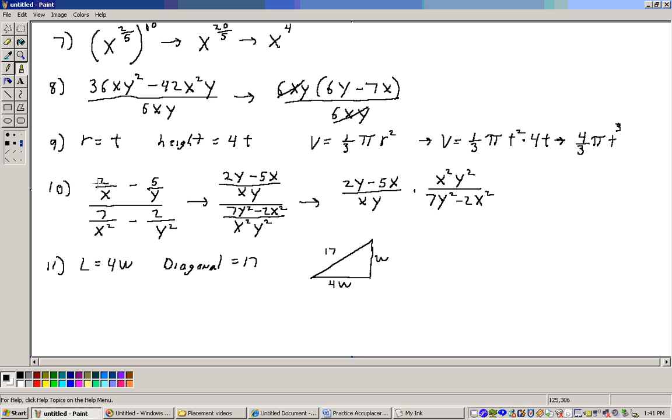Number 10 is a messy one too. We've got a complex fraction, 2 over x minus 5 over y, all that over 7 over x squared minus 2 over y squared. We've got to get a common denominator on the top fraction, which would be xy. What's extra here that's not in this denominator? A y, so take the y times the 2 to get 2y. What's in the common denominator that's not in here? An x, and x times 5 is 5x. On the bottom, the common denominator is x squared y squared.